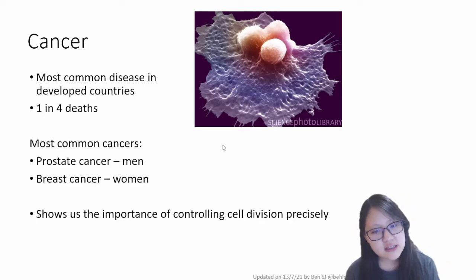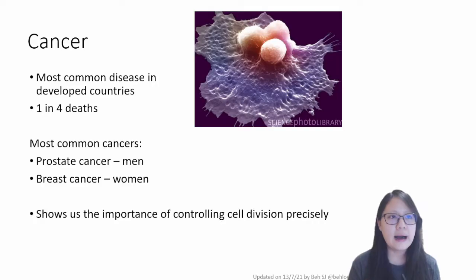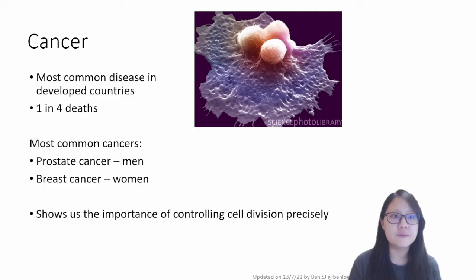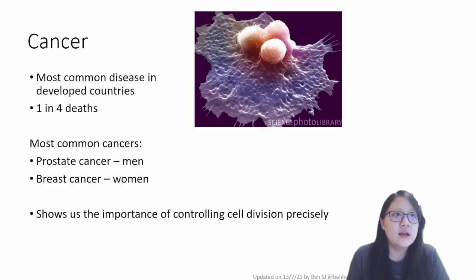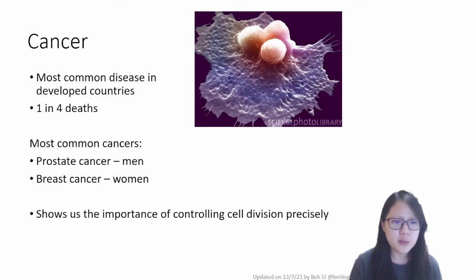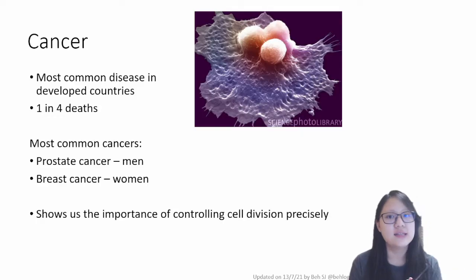The reason we want to talk about cancer is because it shows us the importance of controlling cell division precisely. Earlier in this series we talked about how the cell cycle is tightly controlled with checkpoints to ensure cell divisions happen smoothly and no DNA errors are passed on to daughter cells. What happens when there's something wrong with the cell cycle — when there is uncontrolled mitosis? Cancer. Cancer is a result of uncontrolled mitosis.